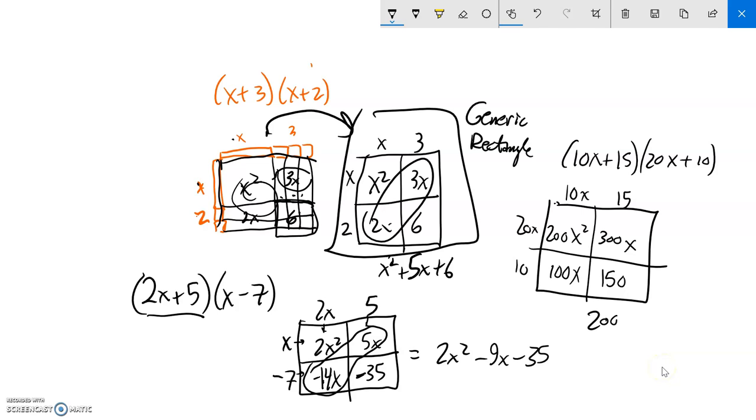And then I could say, oh, that would be the same as 200x squared. Those will combine plus 400x plus 150. So give the sheet a try. Let me know what questions you have.